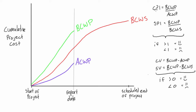For the indices, if either of them is greater than one that's a good thing. For the cost performance index, if it's greater than one you are under budget. If the schedule performance index is greater than one you are ahead of schedule. If they're less than one, that's not good: a CPI less than one means you are over budget, and an SPI less than one means you are behind schedule.